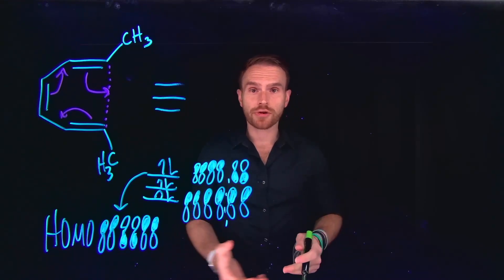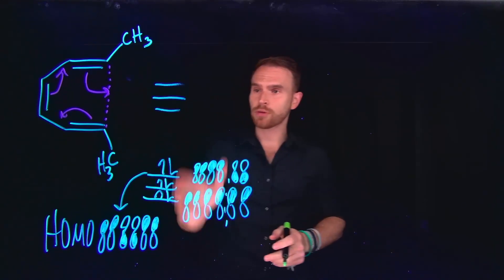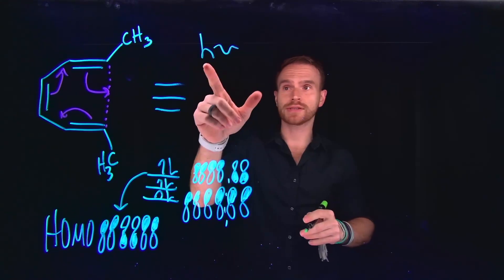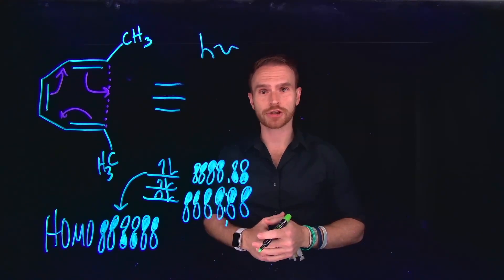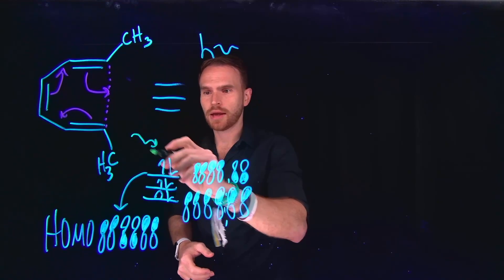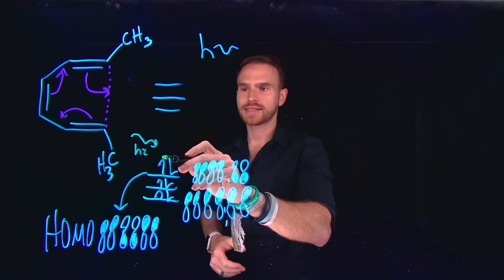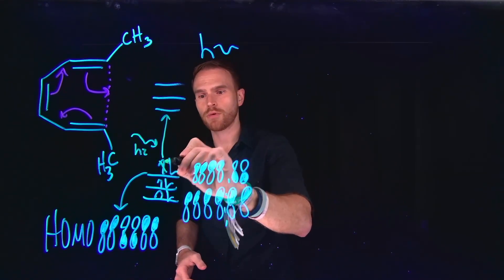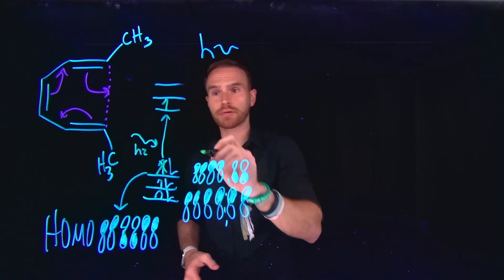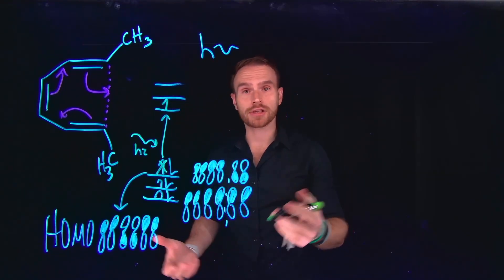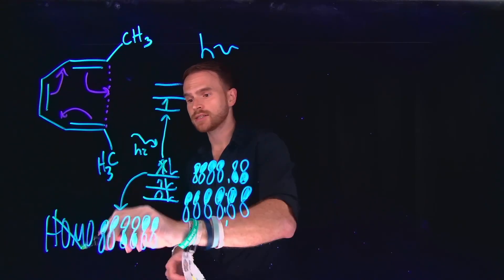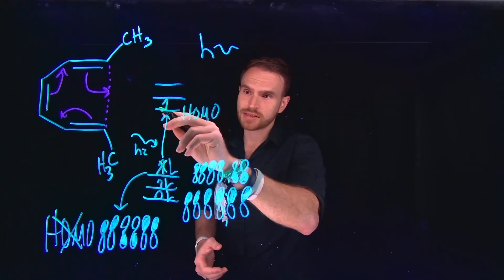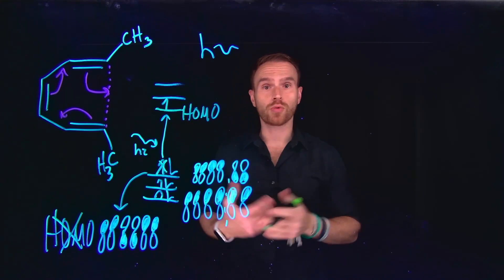That reaction was under the presence of heat. However, reactions can also occur under the presence of light, or a photochemical reaction. When light shines on the molecule, a single electron is excited into the next lowest energy molecular orbital — removing one electron from the current HOMO and placing it in the next orbital. This actually changes what our HOMO is, so our new HOMO becomes this higher molecular orbital.